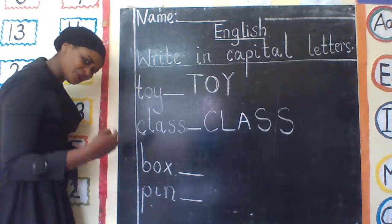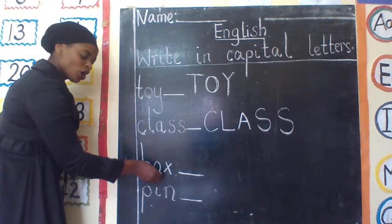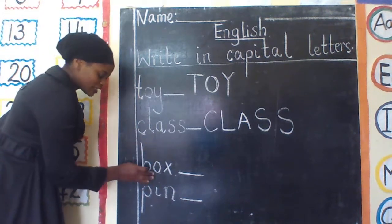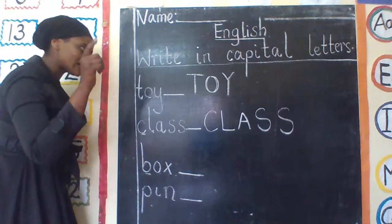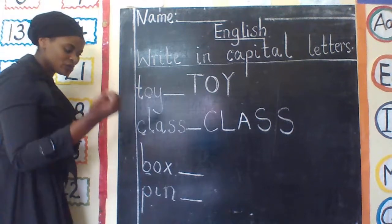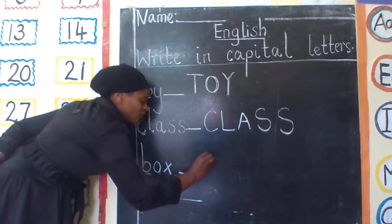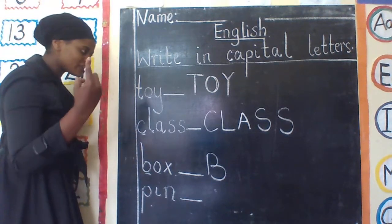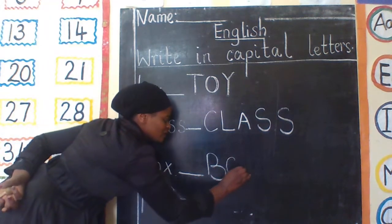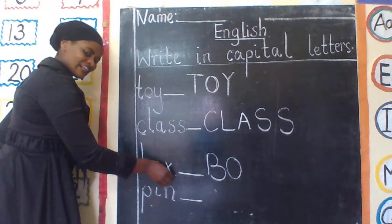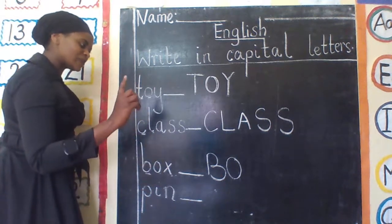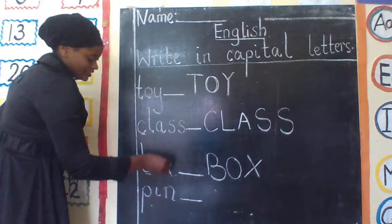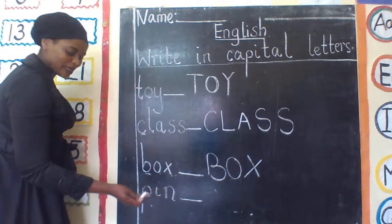This — can you try to read this? This is the word box. Before you write, go step by step. The first letter is B. How do you write B in capital? This is capital letter B. After B is O. After O is X. You think: capital letter X — you write it here. Well done. This is the word box — this one is in small letter and here it is in capital letter.